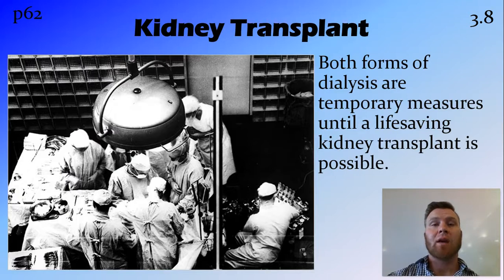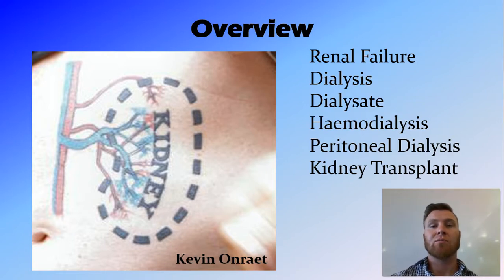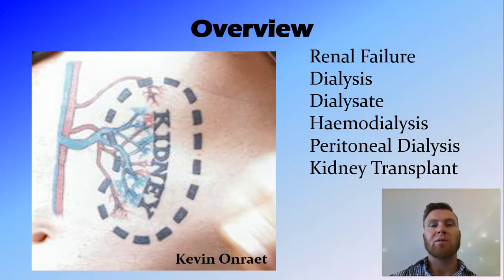At the end of the day both hemodialysis and peritoneal dialysis are short-term solutions — basically just holding you over until you can get that life-saving kidney transplant. In this video we've talked about renal failure when your kidneys stop working, dialysis being an artificial short-term solution using a dialysate that mimics the chemical composition of your blood, the two types of dialysis being hemodialysis where blood is taken out, cleaned, and returned to the body, and peritoneal dialysis where dialysate is put into the body and then taken out when it's dirty. These are temporary measures, and a kidney transplant is the only permanent solution to this problem. Thanks for watching guys.